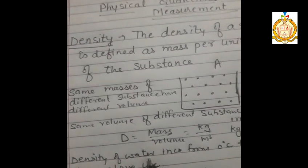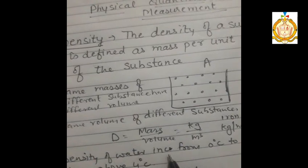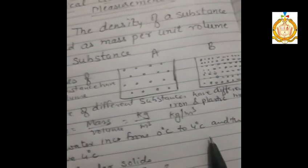Water is a special case for density. The density of water increases from 0°C to 4°C and then decreases above 4°C. For regular solids, we can find density using the formula D = m/v. The volume of a cube is side cubed.